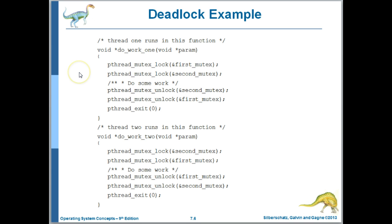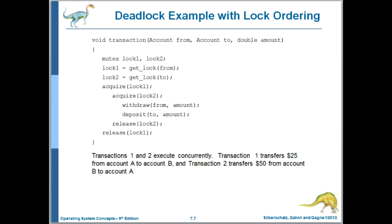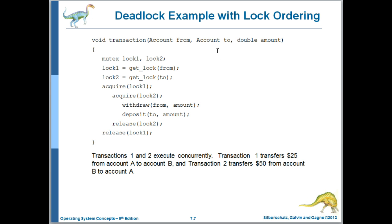So if these threads each manage to acquire — this one acquires the first mutex and this one acquires the second mutex — then they're deadlocked. Here's an example in which it looks like we've put an order on the requests of these locks. Two threads running the same transaction function requesting locks in the same order, but due to the actual locks being requested from 'account' and 'to account' being reversed for two transactions, we can still end up with a deadlock. A solution here might be to request locks in the order of the account number.